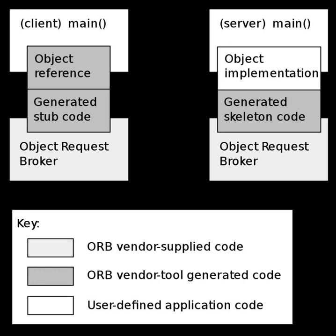CORBA uses an interface definition language to specify the interfaces that objects present to the outer world. CORBA then specifies a mapping from IDL to a specific implementation language like C++ or Java.